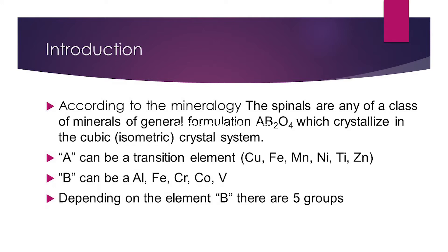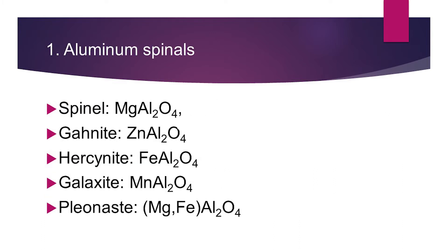Depending on the B element, there are five categories. The first one is the aluminium spinels. Under that, the first is spinel — the usual spinel identified in gemology — and then gahnite, hercynite, galaxite, and pleonaste. These all come under the aluminium spinels.